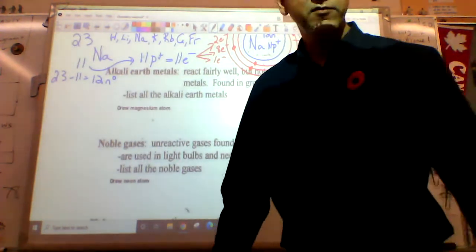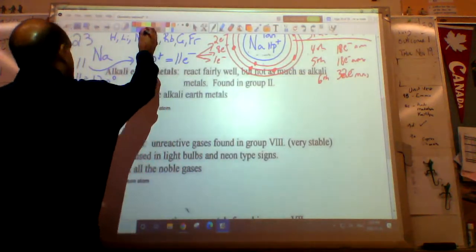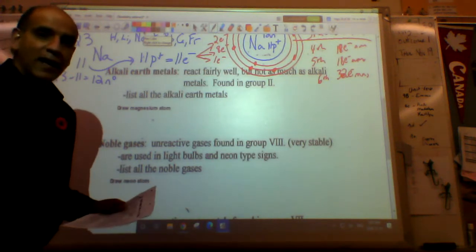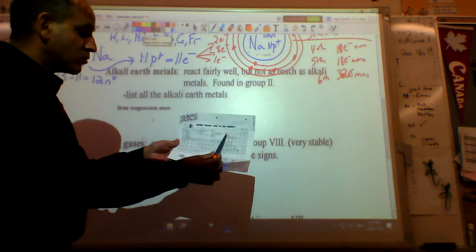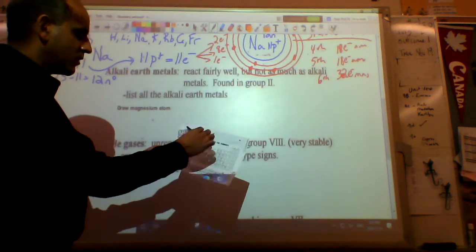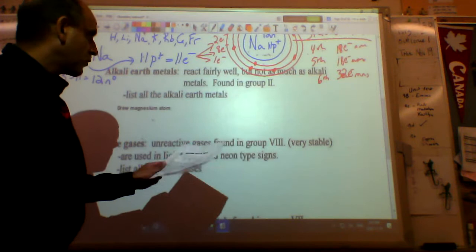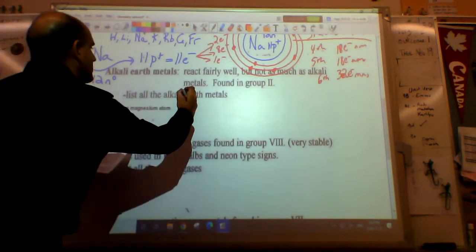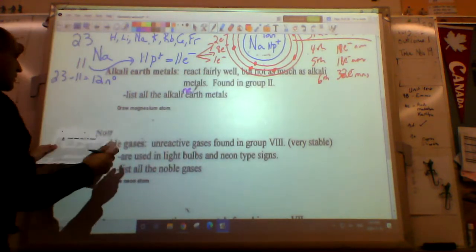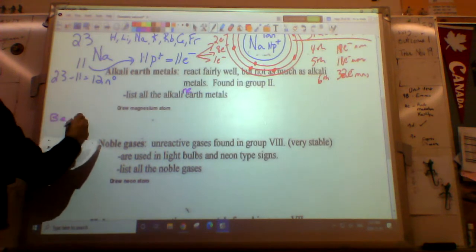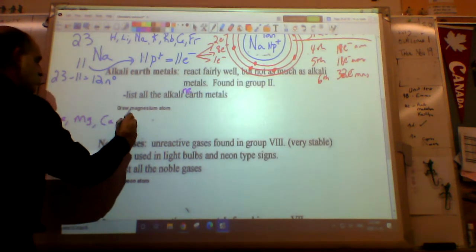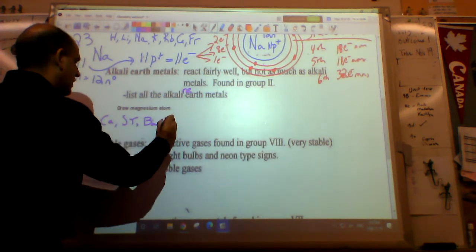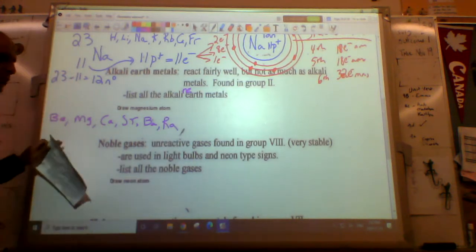Alkali earth metals. First we have to list all the alkali earth metals. That's in group two. These react fairly well, not as well as group one, and we already know that - as we go this way and down, metals become more reactive. We learned that a couple lessons ago. I'm going to list all the alkaline earth metals. The first one is Be, then magnesium Mg, then calcium, strontium, barium, and radium. They're in group two.